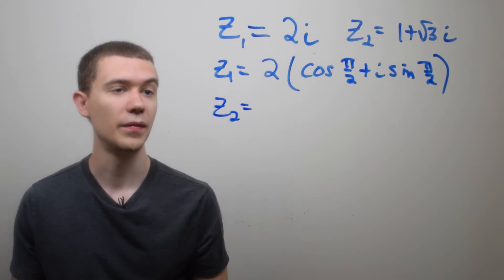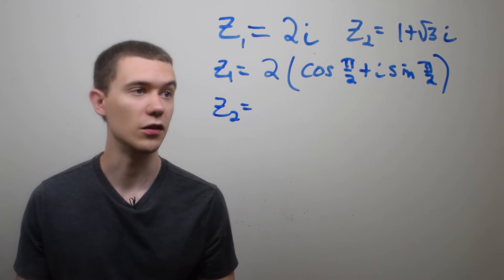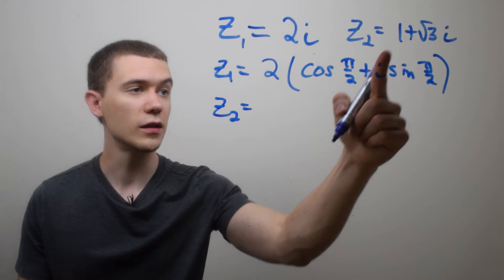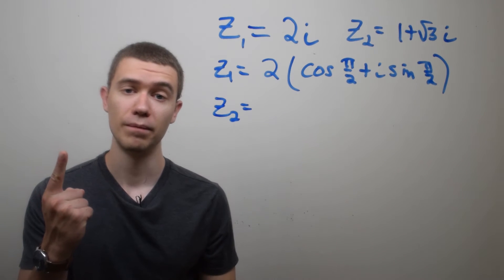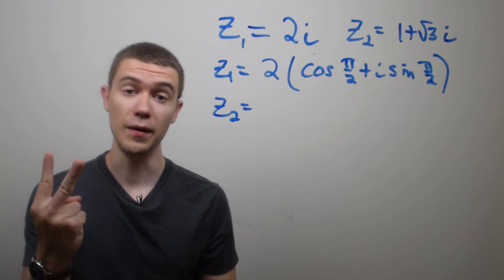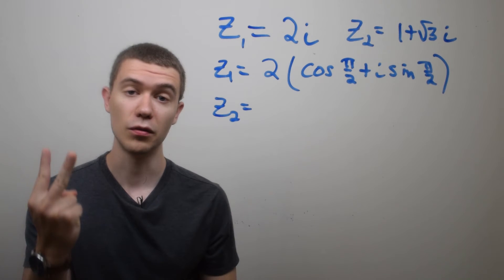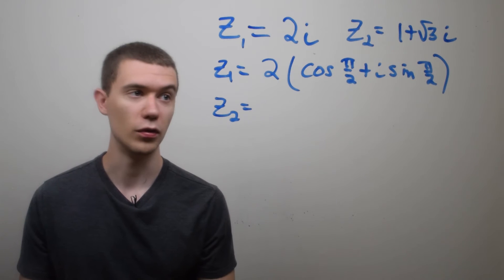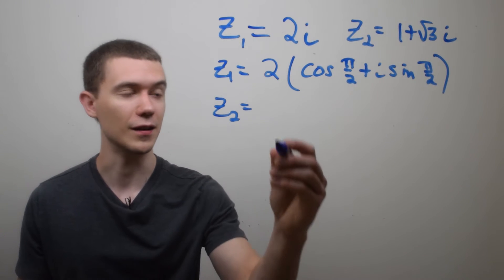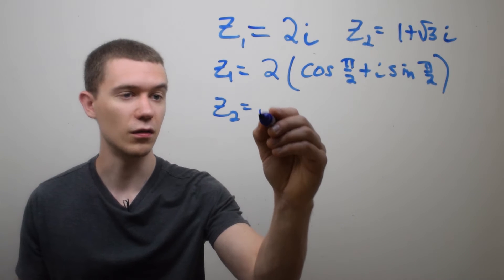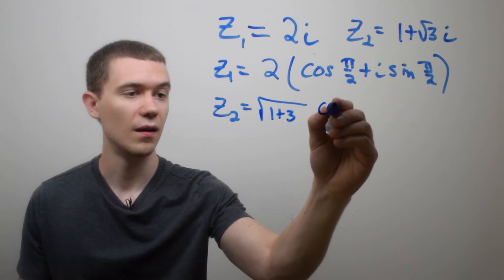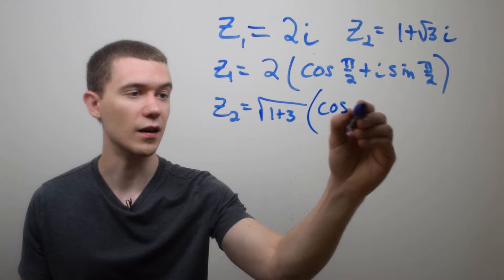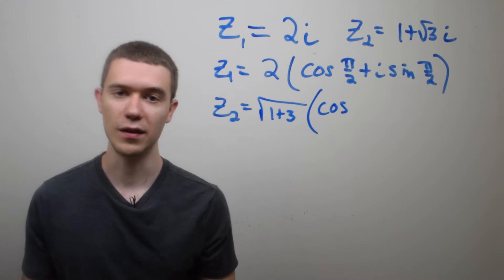Likewise z2 is equal to the modulus of z2. The modulus of 1 plus √3i: 1 squared is 1, √3 squared is 3, 1 plus 3 is 4. Square rooted will also give me 2. So here this is just going to be the square root of 1 plus 3 times the cosine of this argument.